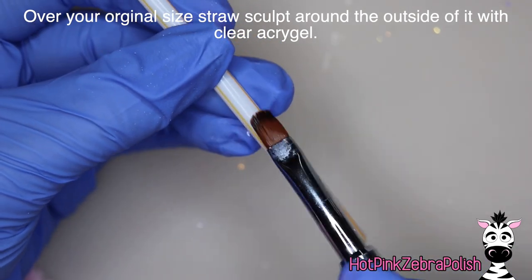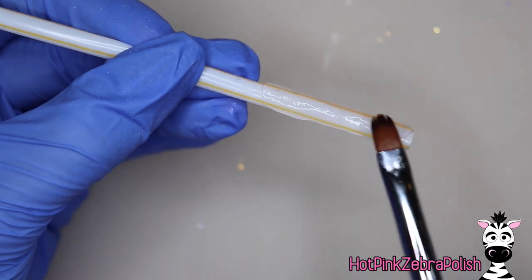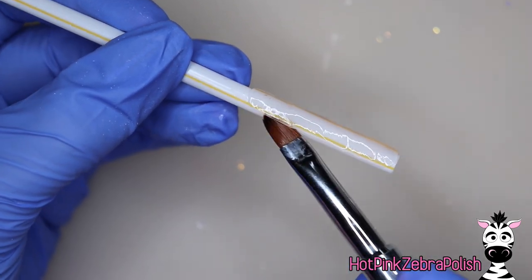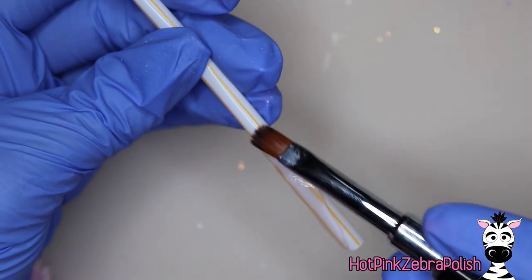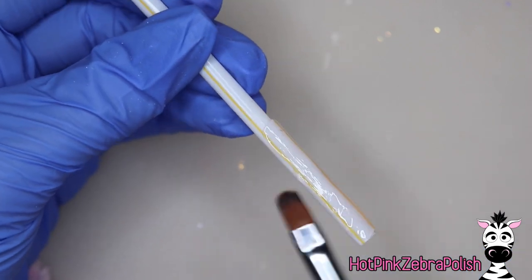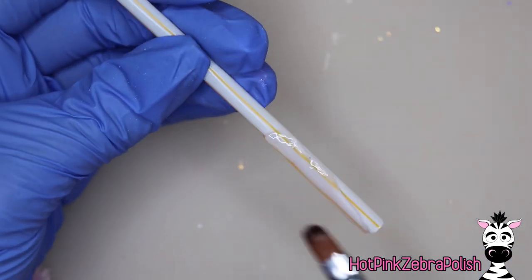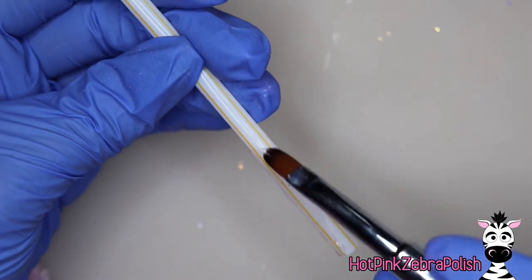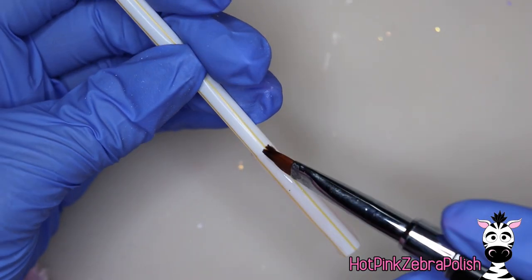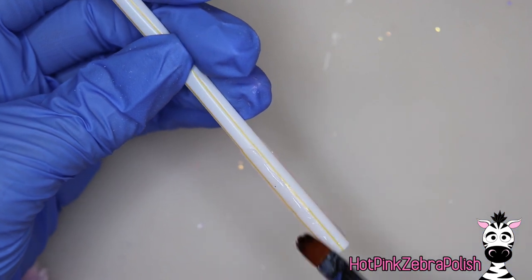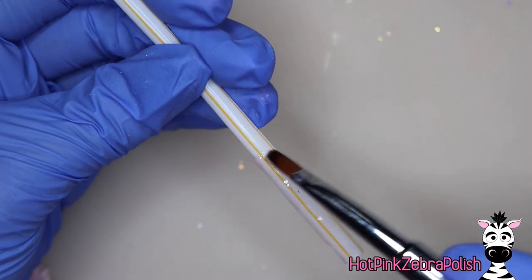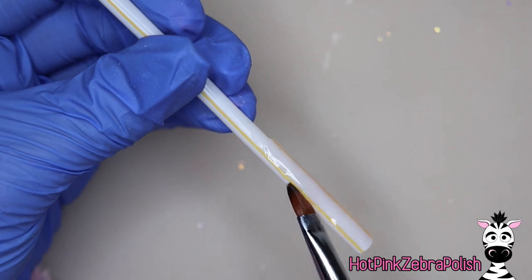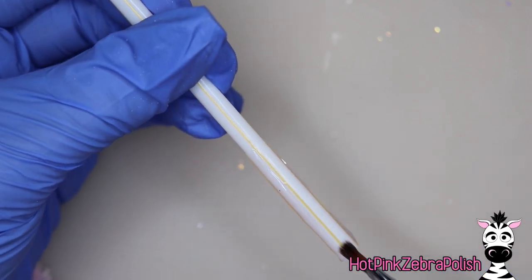Now I'm going to sculpt the outside of my little slider mechanism on the outside of a straw. So it's the same size straw as what we sculpted on the inside with. We're going to just sculpt kind of a little bit better than a half circle around the outside of the straw with more of the clear acrogel. Try to make it as thin as possible so it's not super bulky. Keep in mind that this is kind of important to have it really long because it's going to help give some stability to the tip of the nail.